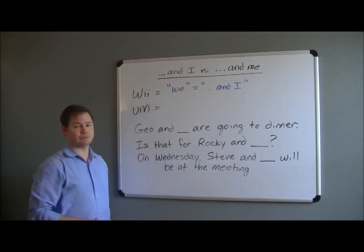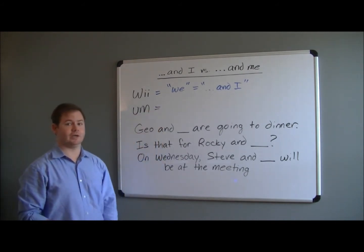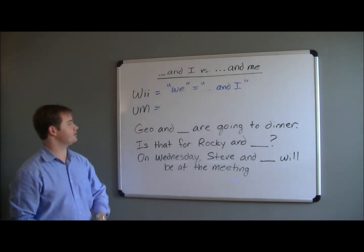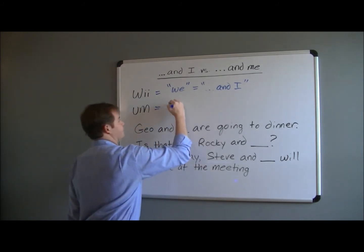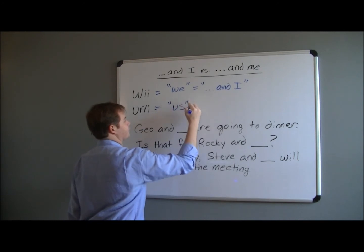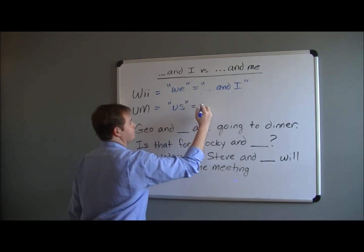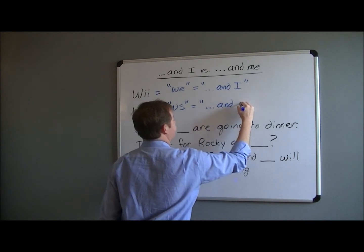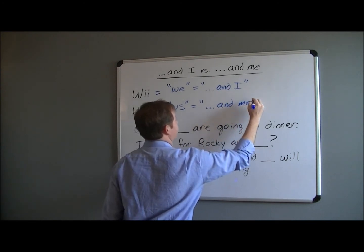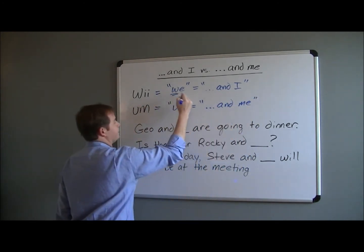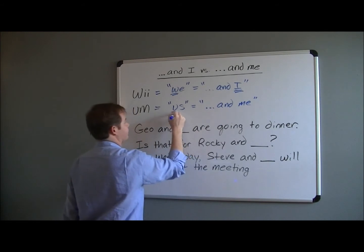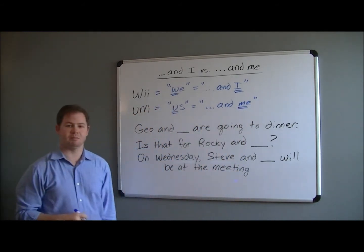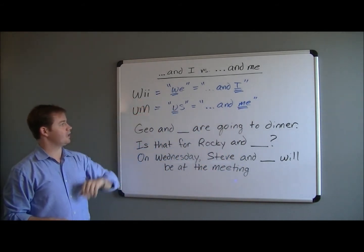The next part of the rule I call the U-M rule — I happen to be a Miami Hurricanes fan, so I remember it that way. This part of the rule is that 'us' is interchangeable with 'and me.' So for 'we' and 'I,' and 'us' and 'me,' we can remember those as the Nintendo Wii rule and the U-M rule.